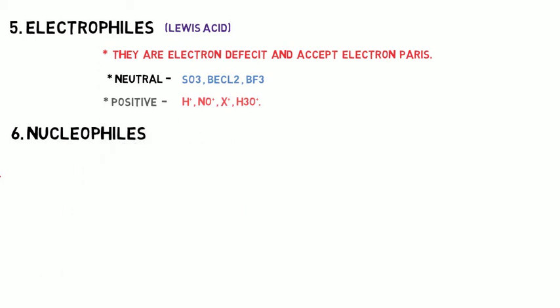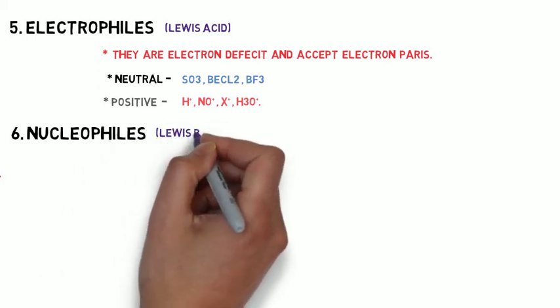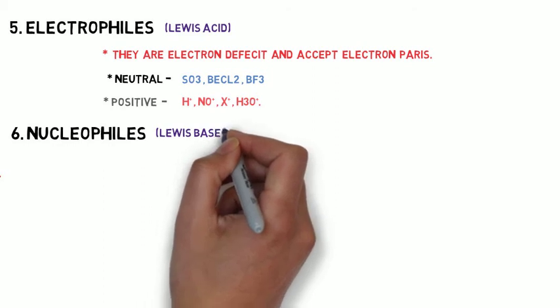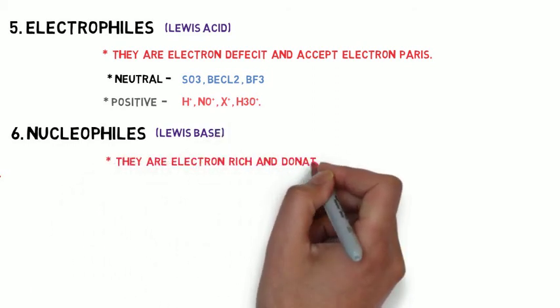Then the sixth one is nucleophiles. Nucleophiles is just opposite of electrophiles. It is a Lewis base. They are electron-rich and they donate electron pairs to other atoms.